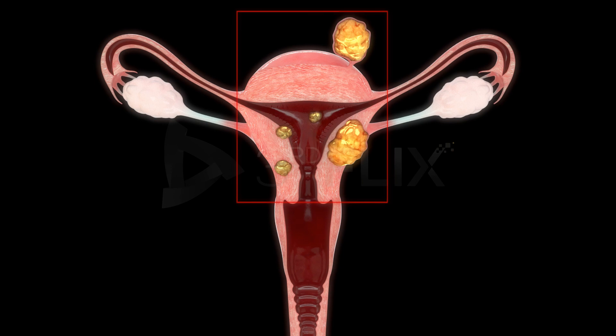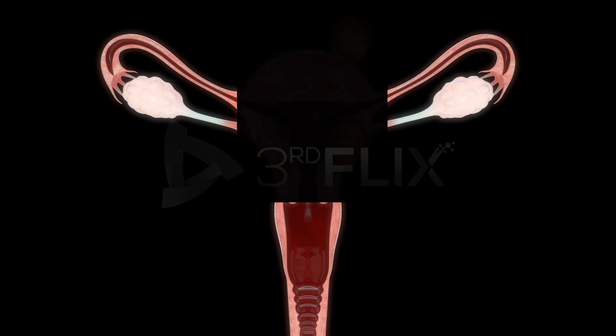Surgical removal of the uterus is called hysterectomy. In certain conditions like uterine fibroids or cancer, the uterus is surgically removed.